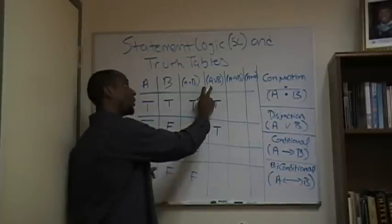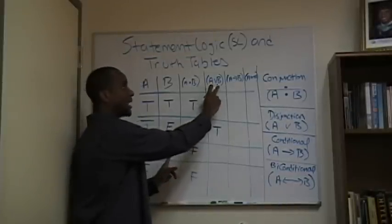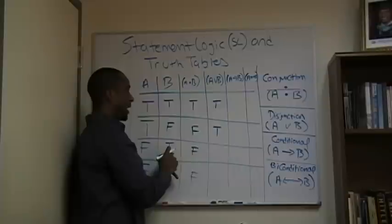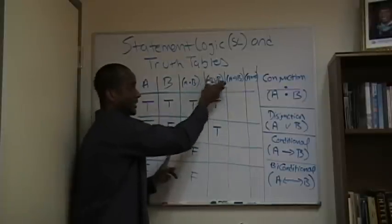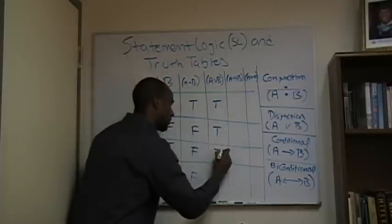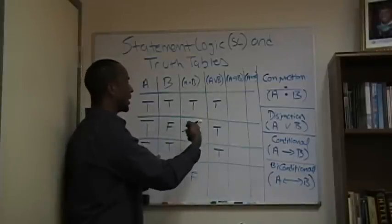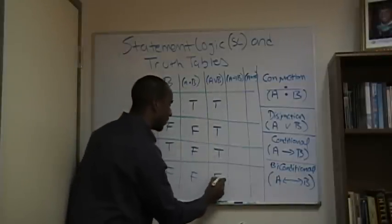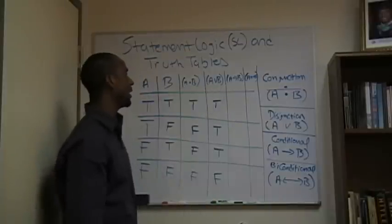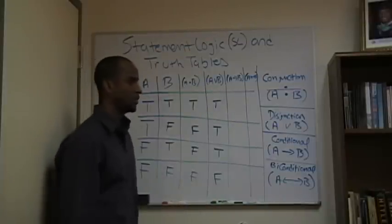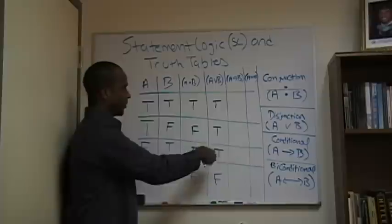Now we say, well, now A is false, but look, B is true. So if B is true, then since at least one of them is true, it's true. Well, as you can see, it's just the opposite of the conjunct, right? The only one that becomes false is when both A or B is false. So it's the polar opposite.